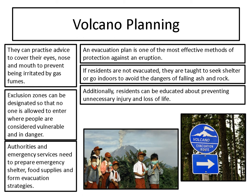Volcano planning is slightly different. They practise advice on how to cover eyes, nose and mouth to protect against gas fumes. They have exclusion zones — like around Mount St. Helens, where people inside that zone are told not to go. The authorities and emergency services are prepared. The most effective planning is to have a good evacuation plan, know where people should be and that they should stay indoors if possible because they're less likely to be affected by gases. Clear evacuation routes — like that bottom right picture — mean people know where to go without panicking.